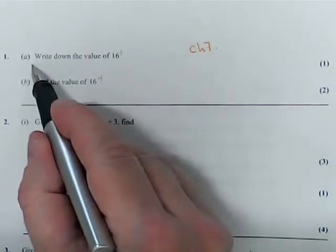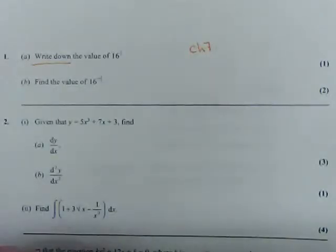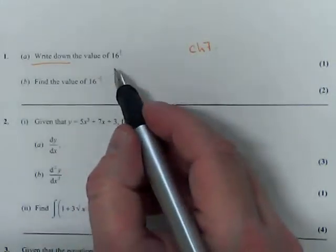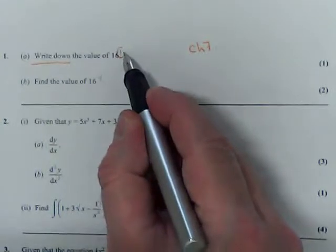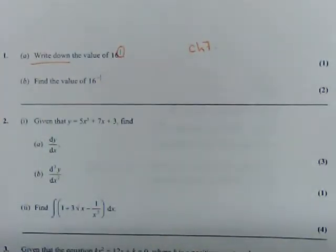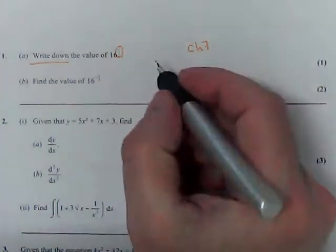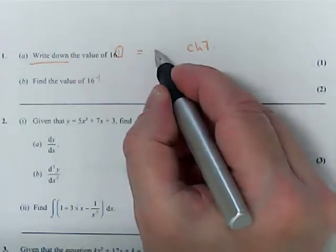In the first one, we've got to write down. That means no working required, the answer is all they need. But you know that a fractional power, like a half, causes rootiness. So this is going to be some kind of root of 16.